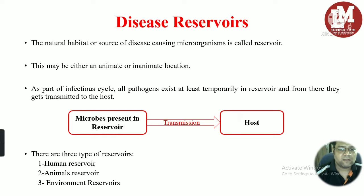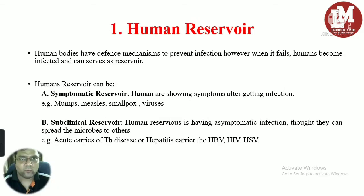As you can see from this line diagram, microbes naturally present in reservoirs get transmitted and reach the host, where they might cause infection or disease. There are three types of reservoirs: human reservoirs, animal reservoirs, and environmental reservoirs.